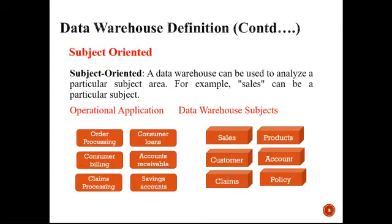A data warehouse is a combination of subject-oriented, integrated, time-variant and non-volatile properties. Subject-oriented means a data warehouse can be used to analyze a particular subject area. For example, sales can be a particular subject. In an organization, different fields like sales product, customer account, and train policy exist. The operations performed — such as order processing and consumer loans — and all such fields in the data warehouse are called subjects.